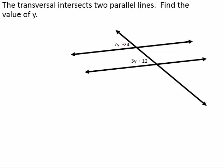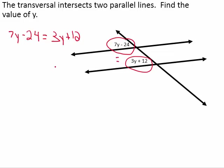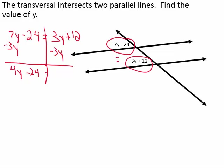For this one, notice that 7y minus 24 and 3y plus 12 are corresponding angles, and corresponding angles are congruent, meaning that they are equal. So we end up with 7y minus 24 is equal to 3y plus 12. We have y's on both sides of the equation, so I'm going to subtract the smaller amount of y's from both sides. 7y minus 3y leaves me with 4y minus 24 equals 12.